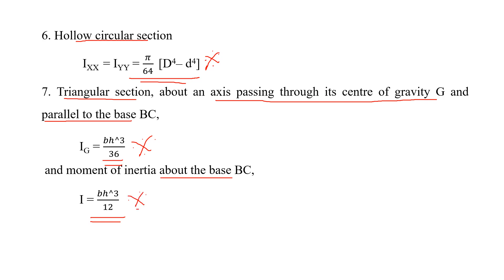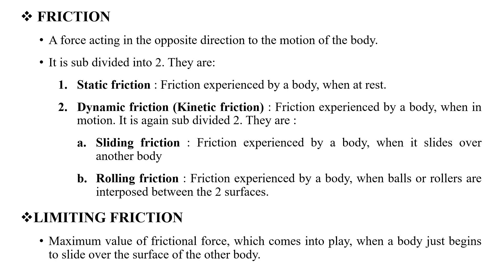The next topic is friction. In friction, when one body moves over another, a force acts in the opposite direction to the motion. We subdivide friction into two types: the first one is static friction and the second one is dynamic friction. When a body is stationary, we deal with static friction; when a body is in motion, we call it kinetic friction.